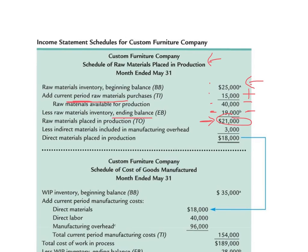Remember that some of the raw materials placed in production relates to indirect materials. In a custom furniture and woodworking context, that might be things like glue and nails used in production — those are indirect materials and are already captured in manufacturing overhead. So we subtract that $3,000, which tells us that $18,000 of direct materials were actually placed into production. This first schedule relates to the raw materials inventory account.